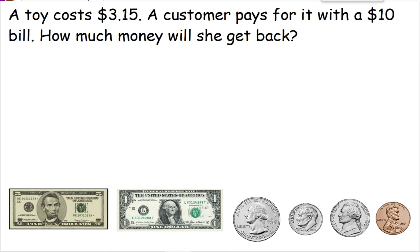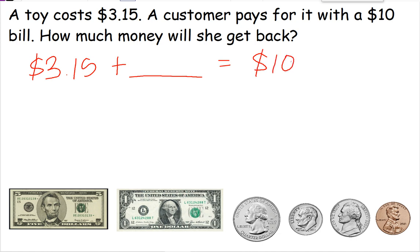On this one, a toy costs $3.15. The customer pays for it with a $10 bill — how much money will she get back? So we have $3.15 plus something equals $10. 5 plus something equals 10 — 5 plus 5 equals 10. 1 plus something equals 9 — 1 plus 8 equals 9. And 3 plus something equals 9 — 3 plus 6 equals 9. So the customer will get back $6.85.